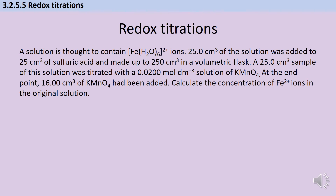Here's an example redox titration calculation. A solution thought to contain hexa-aqua iron ions: 25 cm³ of that solution was added to 25 cm³ of sulfuric acid and made up to 250 cm³ in a volumetric flask. Note that the amount of sulfuric acid is irrelevant — what matters is that the original 25 cm³ is now 10 times more dilute. A 25 cm³ sample of the volumetric flask solution was titrated with 0.02 mol/dm³ potassium permanganate, and at the endpoint 16 cm³ had been added, turning the colorless solution bright purple.